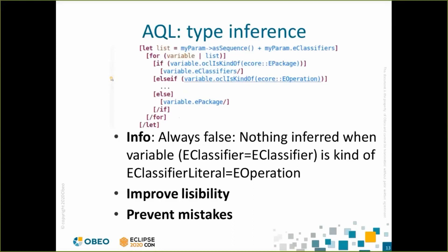The second interesting feature is type inference. In this example, we check if the variable is an EPackage, and in the then block you don't need any cast to access the EClassifier feature. In the elseif, we check if the variable is an EOperation, but in this case it can't be, so we have an information message telling you that the condition is always false. And in the else block, we don't need a cast either, because at this point the variable can only be an EClassifier. This feature is useful for readability and can prevent mistakes.